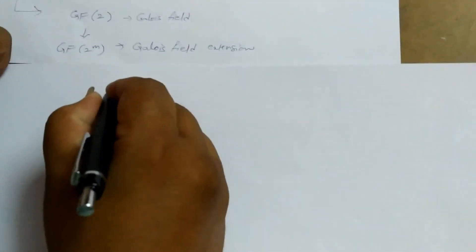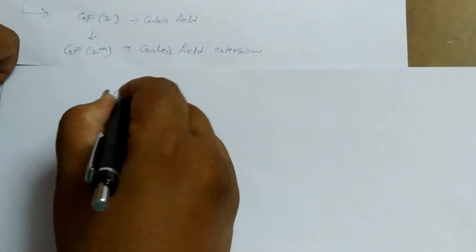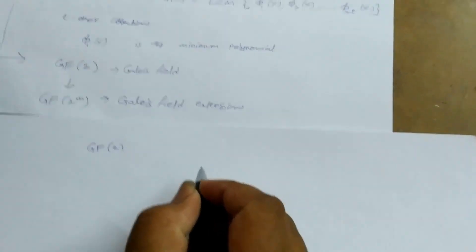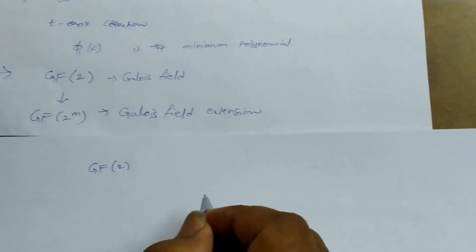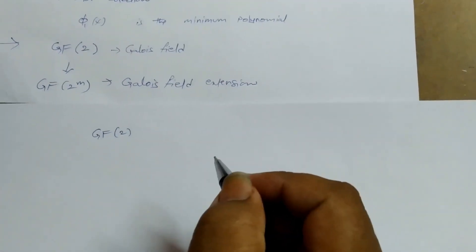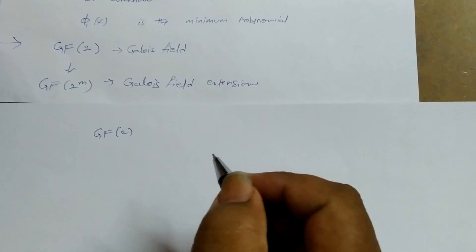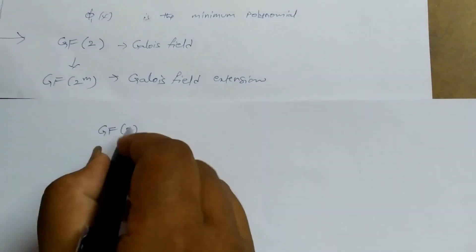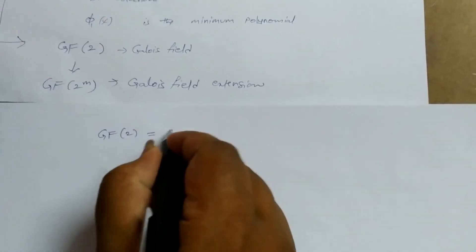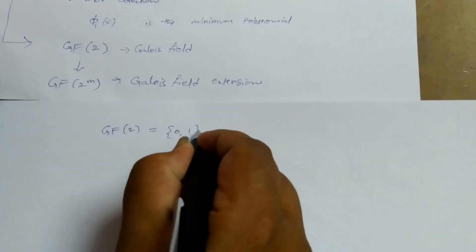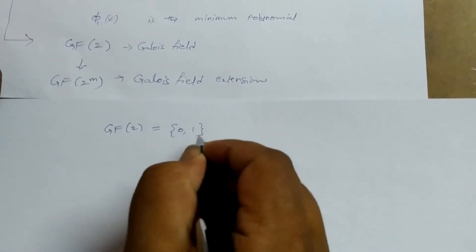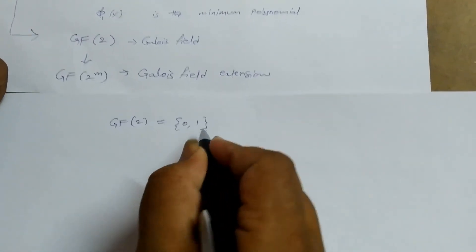What is the Galois field GF(2)? A field is nothing but the set of elements which satisfies multiplication and addition properties and different laws like associative, distributive law, and commutative law. GF(2) is nothing but the Galois field with the basic elements 0 and 1, which satisfies all these properties.